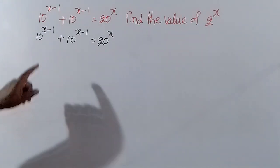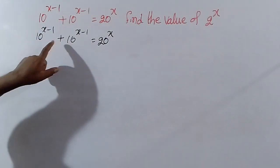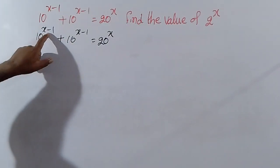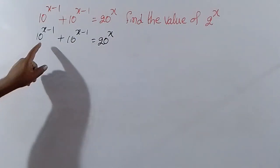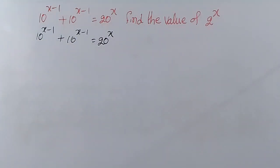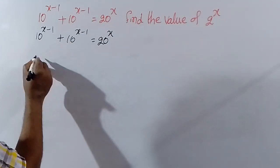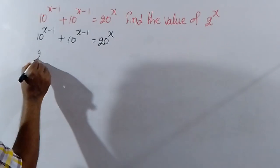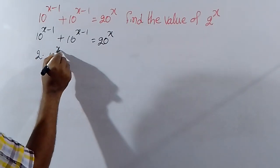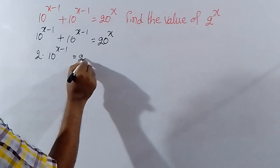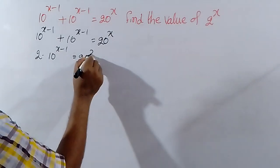In general, the same number is repeated 2 times: 10 power (x minus 1) plus 10 power (x minus 1). When the same number is added 2 times, we can write it as 2 into that number. So 2 into 10 power (x minus 1) is equal to 20 power x.